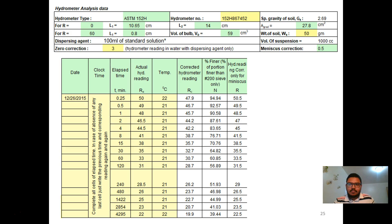Hydrometer readings was corrected with the meniscus correction only. With this, the effective depth of hydrometer can be determined from the table shown in lab manual.